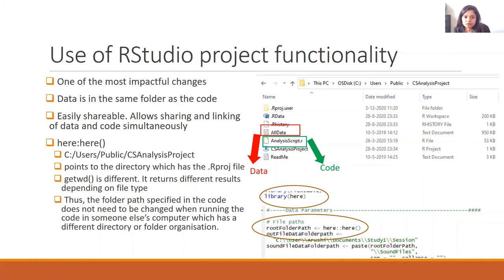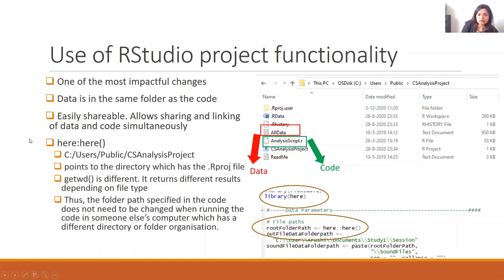What you do is take a variable and assign it the output of this here command. The output of this here command points to the directory in which the project file is saved. So it'll give you this particular path. With this statement root_folder_path, I'm saving this file path. Then later on, I can use this particular variable to access whatever files are in that folder.